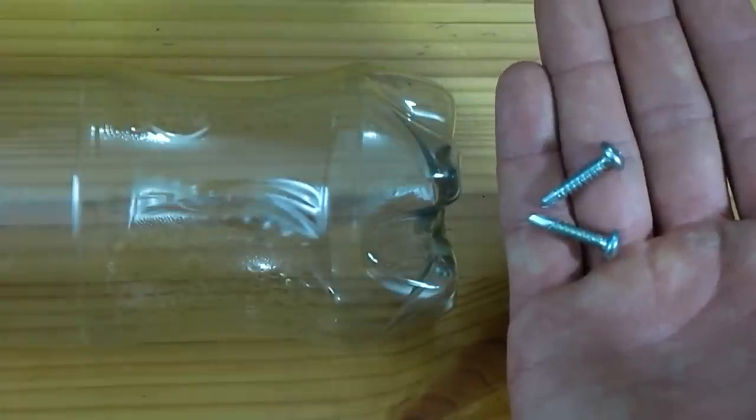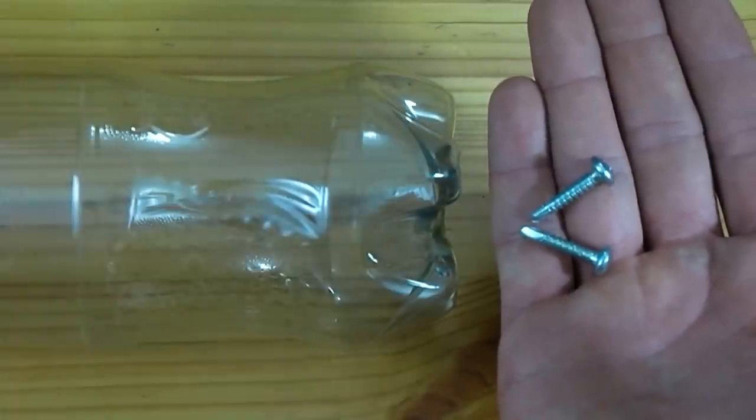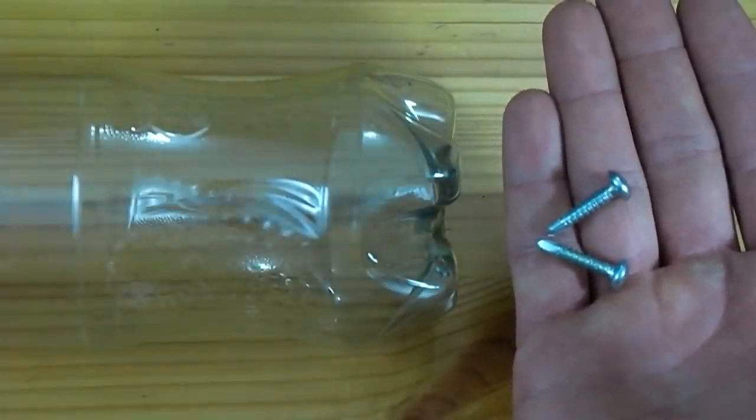Now, in the bottom of the bottle, insert two screws so that they will both come very close to touching on the inside.